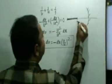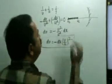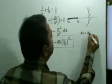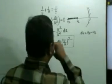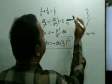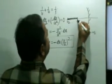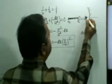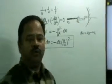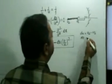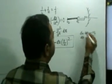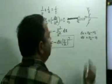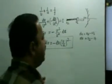So this is u1 and this is u2, and du = u2 minus u1. Similarly, dv = v2 minus v1, which represents the length of the image. This is how we approach the problem.